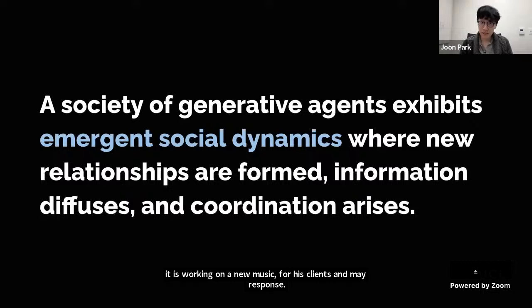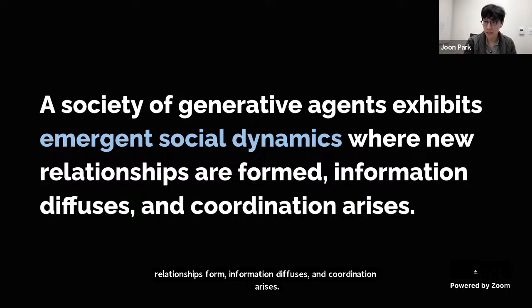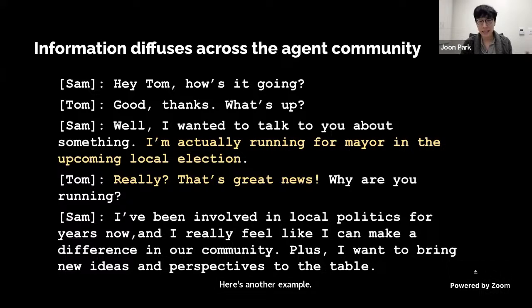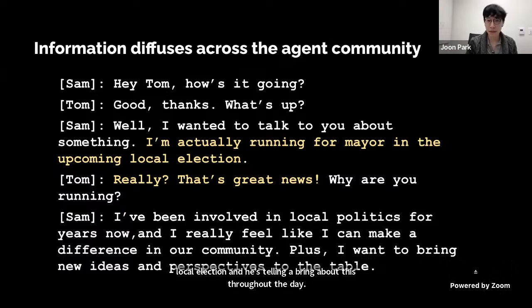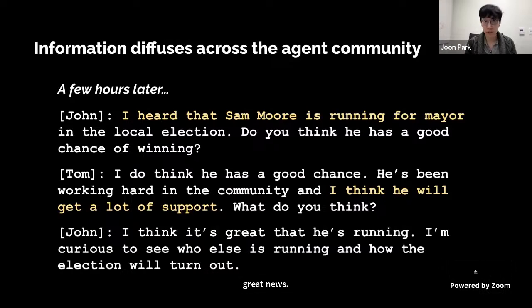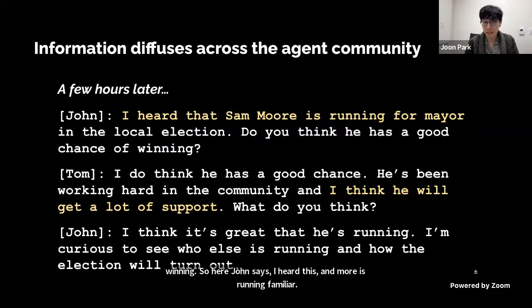As a collective, generative agents exhibit emergent social dynamics where new relationships form, information diffuses, and coordination arises. For example, Sam has a memory that he's running for local election and tells everyone about it throughout the day. He tells Tom: 'I'm actually running for mayor in the upcoming local election.' Tom says: 'Really, that's great news.' A few hours later, John and Tom — colleagues at the local store and pharmacy who independently heard about Sam's candidacy — discuss Sam's chances of winning.